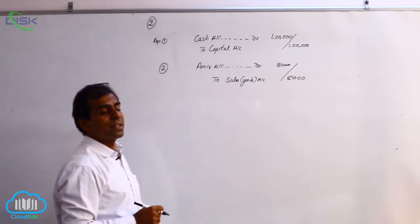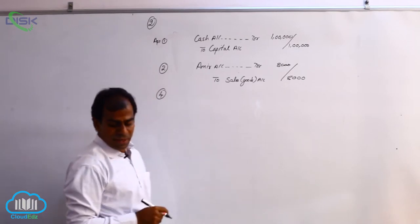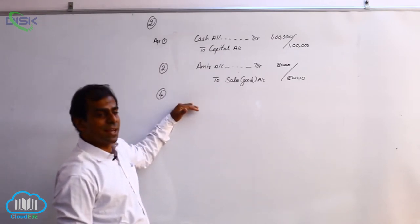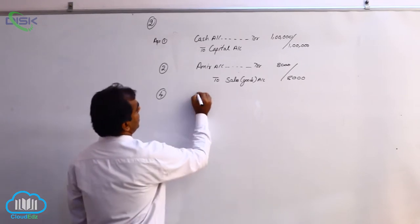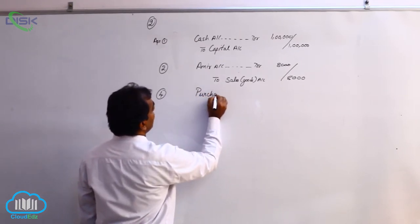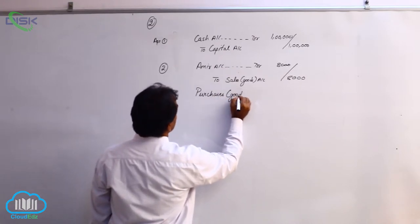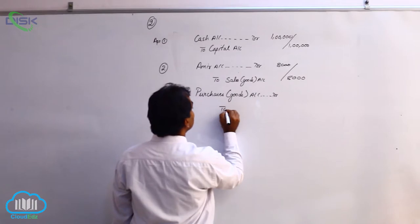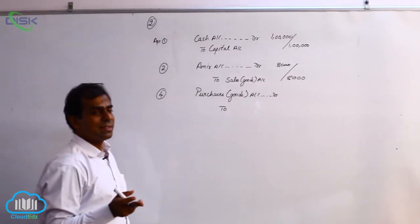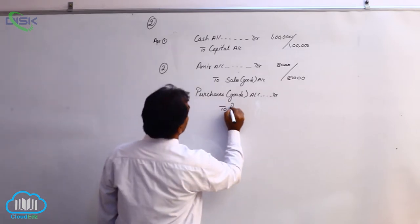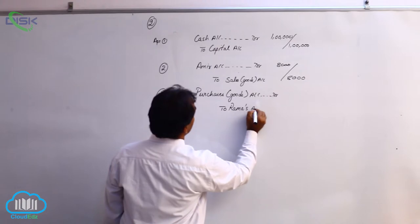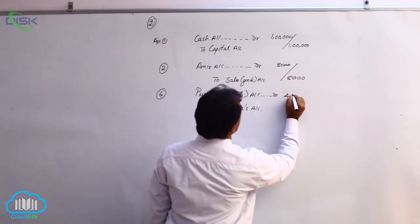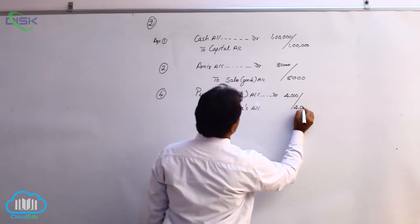The next transaction is on the fourth — purchases from Rama. No amount is paid, therefore it is a credit transaction. You are getting the goods; goods are a real account, so we apply debit what comes in — purchases account debit. Rama is a person, a personal account, so the rule is credit the giver. Rama is the giver of the goods, so we credit Rama's account.